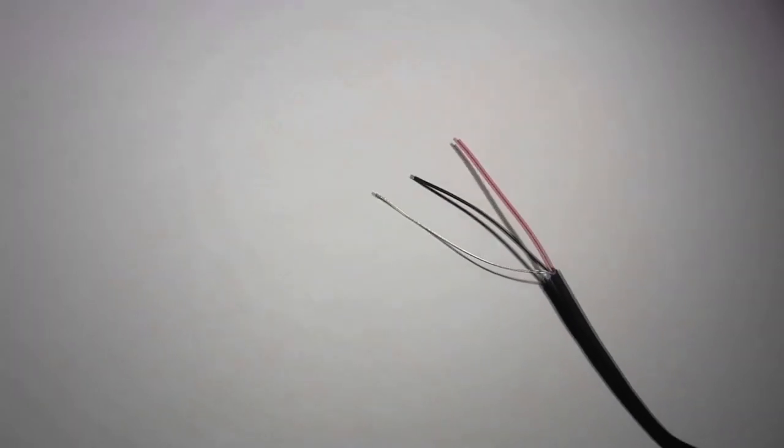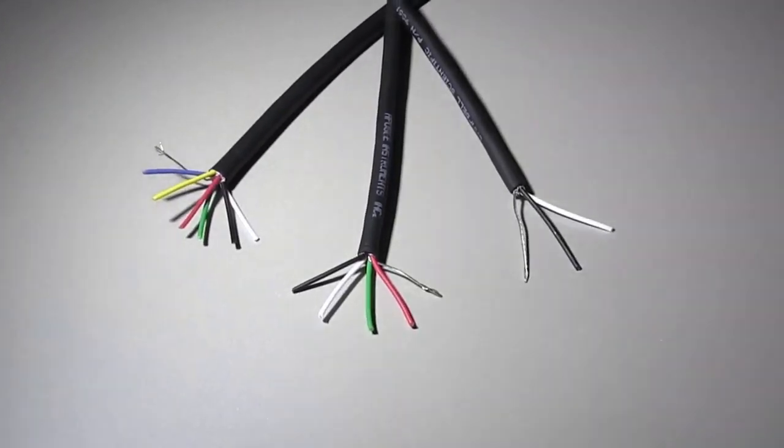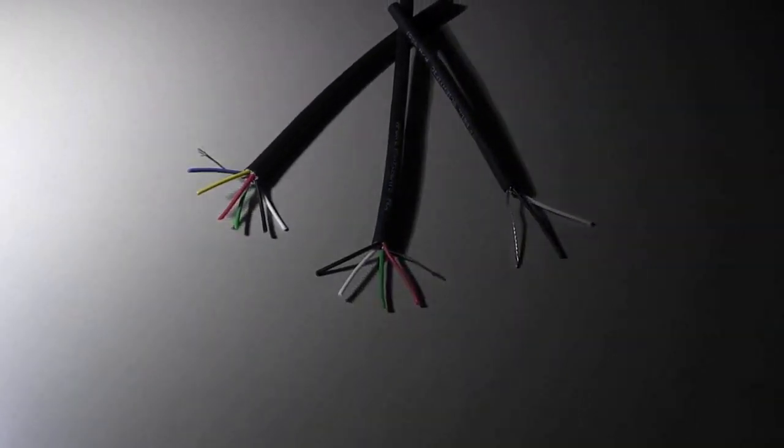In the following demonstration, we'll be using 26 gauge 2 conductor shielded cable. For other kinds of wire, the process is the same, but you will need an additional solder sleeve for each conductor.